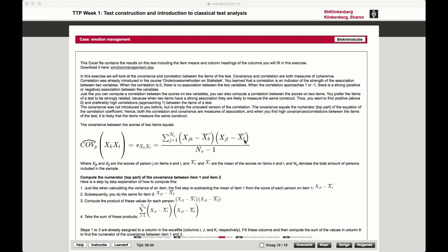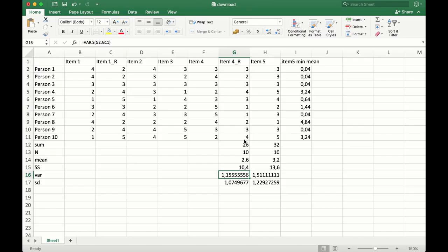I'm going to calculate the covariance of item 4 recoded and item 5. I've already calculated the sums for these items, the mean, standard deviation, variance, sums of squares, variance and standard deviation. So I'm going to be calculating the covariance of these two items.